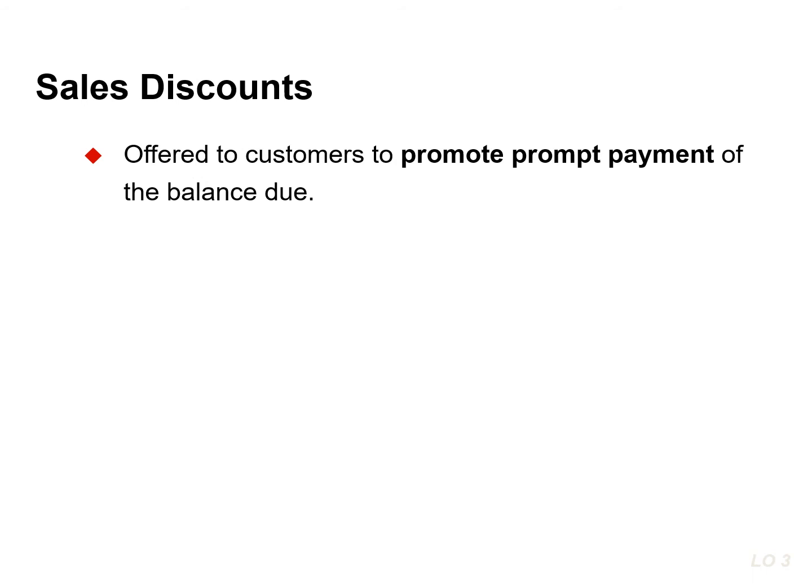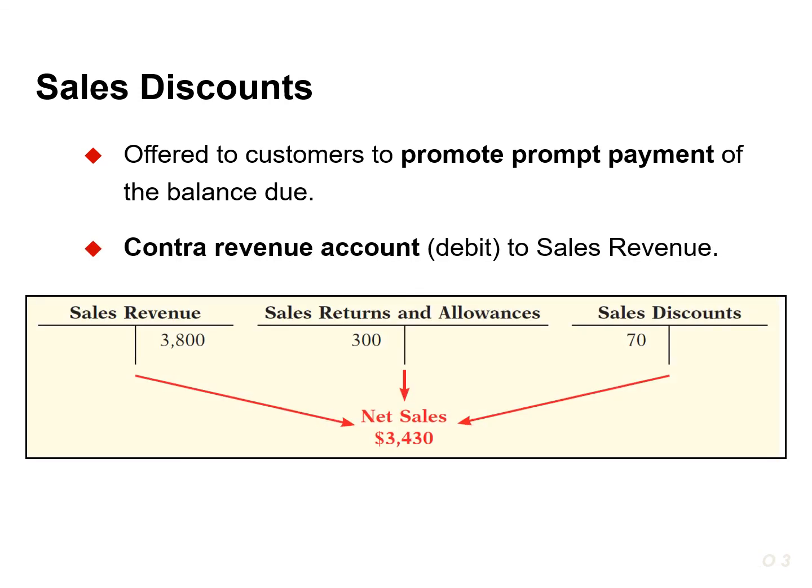As mentioned in our discussion of purchase transactions, the seller may offer the customer a cash discount for the prompt payment of the balance due. The seller refers to this as a sales discount. Like a purchase discount, a sales discount is based on the invoice price, less returns and allowances, if any. The seller increases or debits sales discounts for the discounts that are taken. Like sales returns and allowances, sales discounts is a contra revenue account to sales revenue, and its normal balance is a debit.